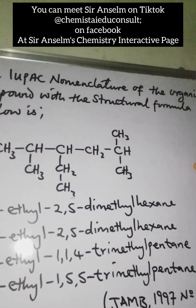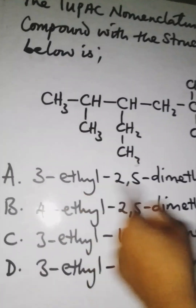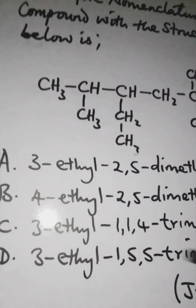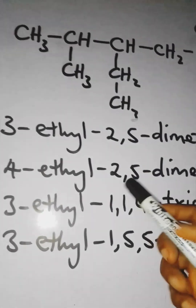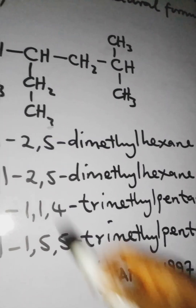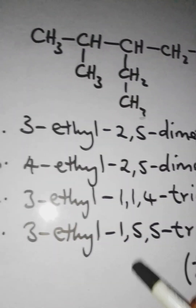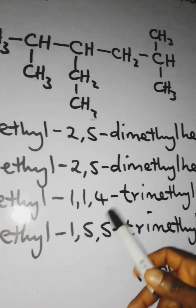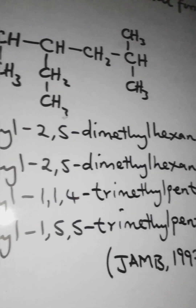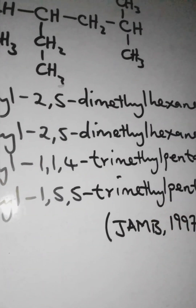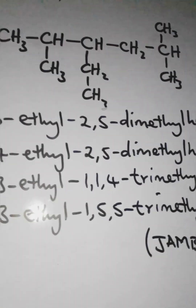The options are: A) 3-ethyl-2,5-dimethylhexane; B) 4-ethyl-2,5-dimethylhexane; C) 3-ethyl-1,4-trimethylhexane; D) 3-ethyl-1,5,5-trimethylhexane. So which one is the correct option? Now how do we solve this?